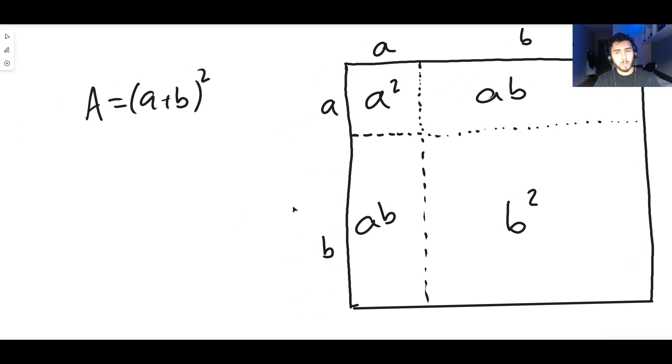The area of this whole square must be the sum of all of these smaller squares and rectangles. So the area of this square can also be written as a² + b² + ab + ab, which is 2ab.